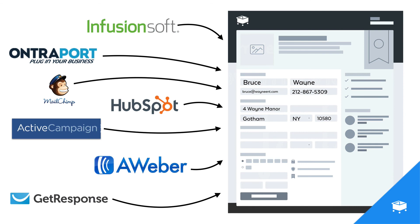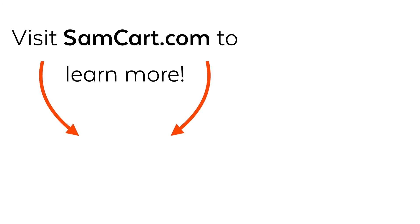Whenever you're sending people directly to a SamCart checkout page from your email marketing tool, you can use merge codes to pre-populate fields so your customers spend less time typing and complete more orders. Visit samcart.com to learn more — you can open up your free trial account today and start using pre-populated checkout fields to capture more orders.